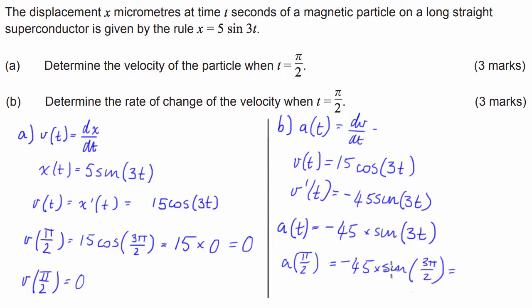And that gives us a solution of negative 45 times the sine of 3 pi over 2. Which is equal to, now the sine of 3 pi over 2 is negative 1. So we have negative 45 times negative 1. And that, my friends, is just equal to 45.